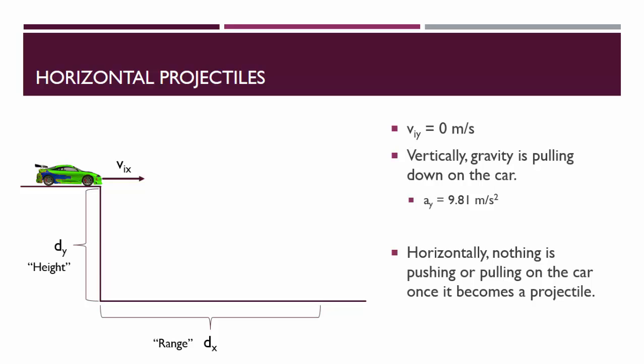Horizontally, once the car becomes a projectile, there are no forces pushing it forward or pulling it backwards. If there's no forces, that means there's no acceleration. So AX, the horizontal acceleration, is zero meters per second squared.